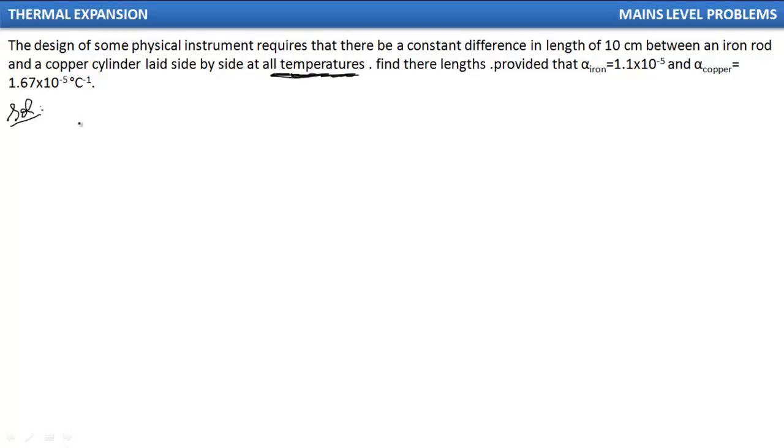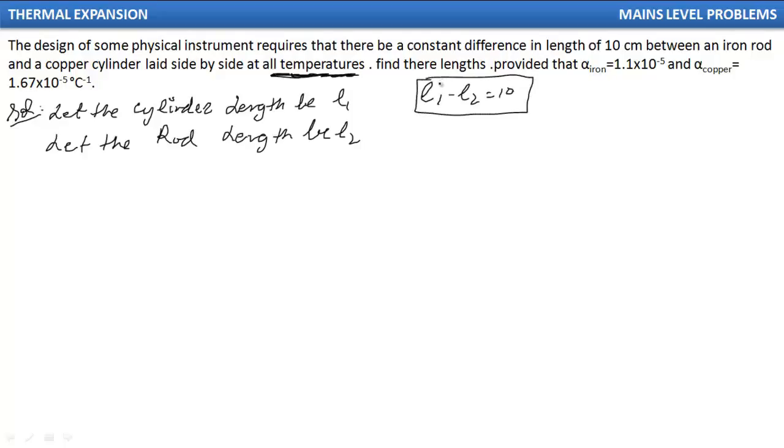Now, if I consider the copper cylinder length, let the cylinder length be L1, and let the rod length be L2. So what is given: initially L1 minus L2 is 10, and they are saying that we can go to any temperature, L1 minus L2 is 10.